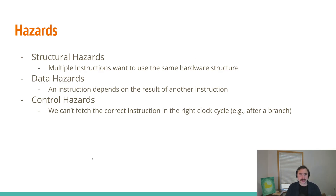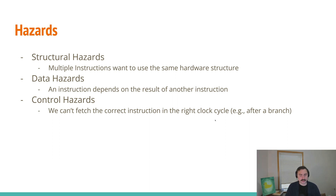So how do we classify these hazards? We can group them into three major categories. First, structural hazards — when multiple instructions want to use the same hardware structure at the same time. Second, data hazards — when an instruction depends on the result of another instruction. Third, control hazards, sometimes called branch hazards — when we can't fetch the correct instruction in the right clock cycle, for example after a branch. With a branch equal instruction, we have to do an equality comparison to figure out whether we go to PC plus four or to some offset elsewhere in the program.